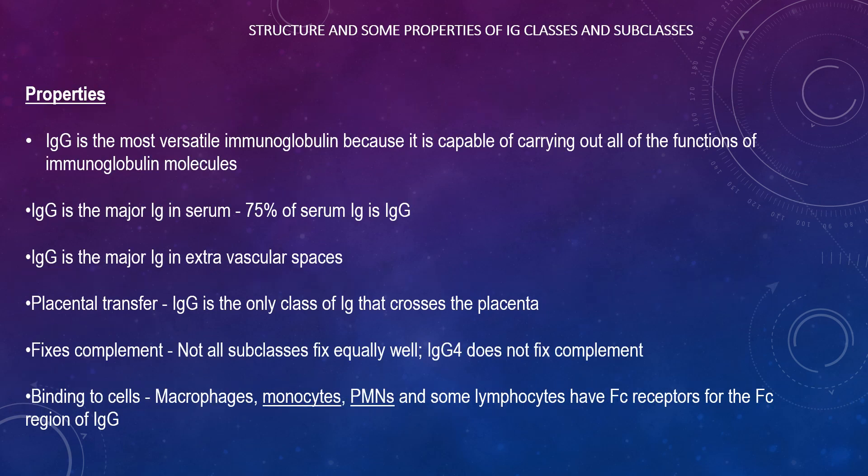Looking at the structure of IgG, IgG is the most versatile immunoglobulin because it is capable of carrying out the functions of all the immunoglobulin molecules. It is the major immunoglobulin in serum at 75% and is the major one in extracellular vascular spaces. IgG is the only class of immunoglobulin that crosses the placenta; this transfer is mediated by a receptor on placental cells for the Fc region of IgG — not all subclasses cross equally well; IgG2 does not cross well. Macrophages, monocytes, PMNs, and some lymphocytes have Fc receptors for IgG; IgG2 and IgG4 do not bind to Fc receptors. Binding to Fc receptors of PMNs, monocytes, and macrophages allows cells to internalize the antigen more efficiently. IgG is a good opsonin — the term opsonin describes substances that enhance phagocytosis.